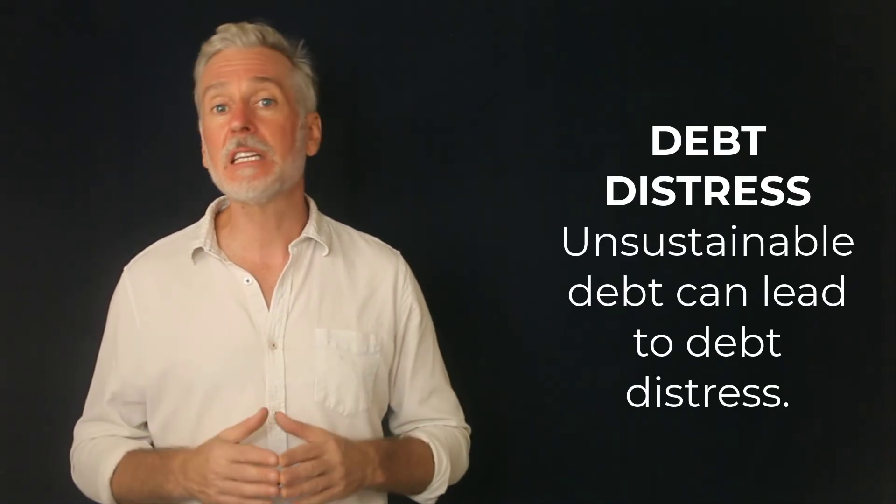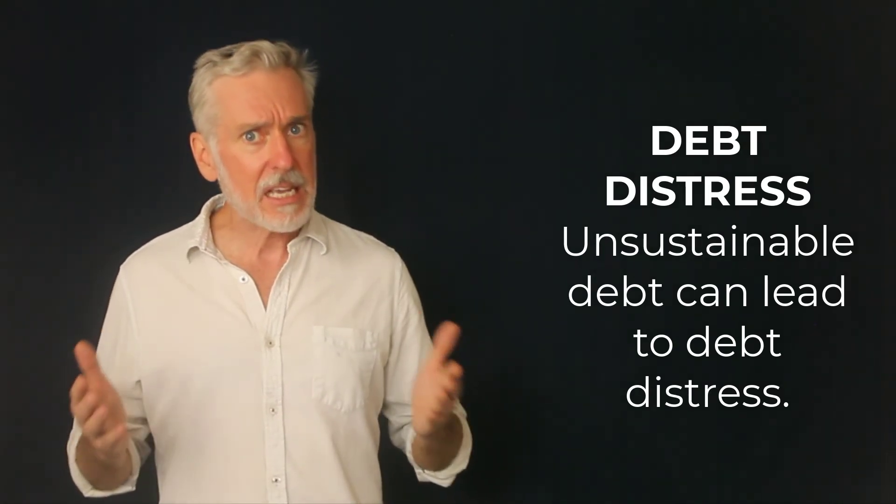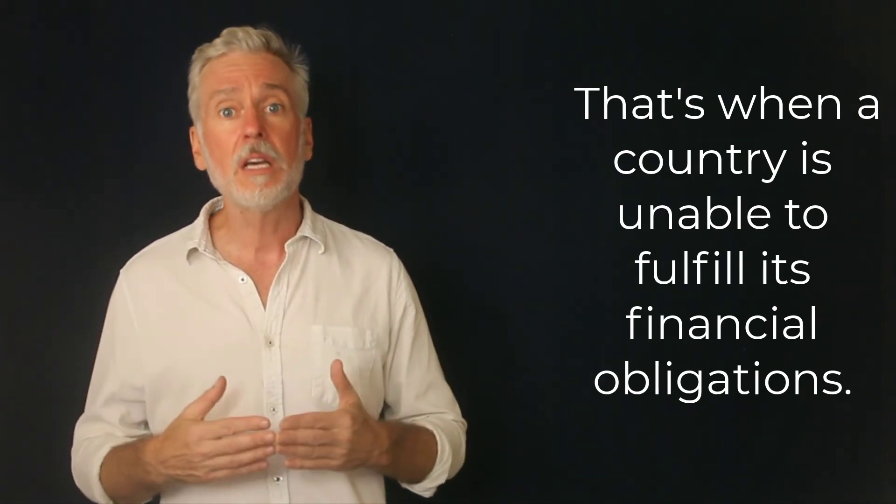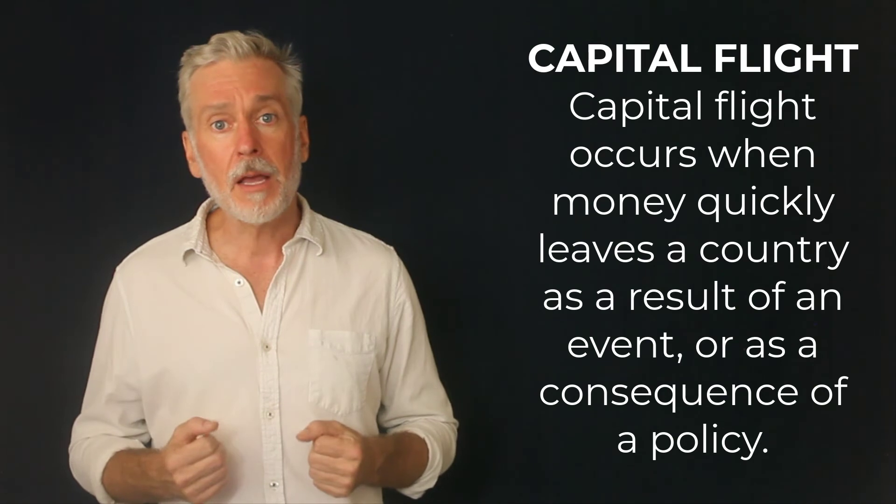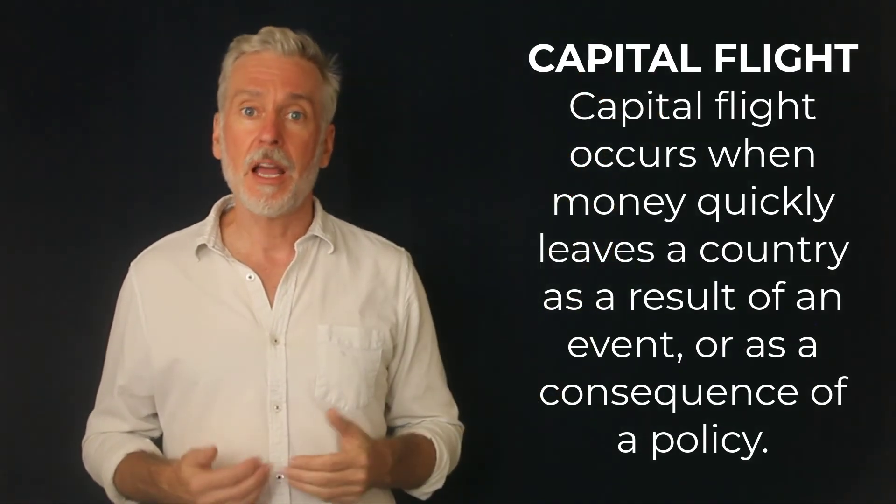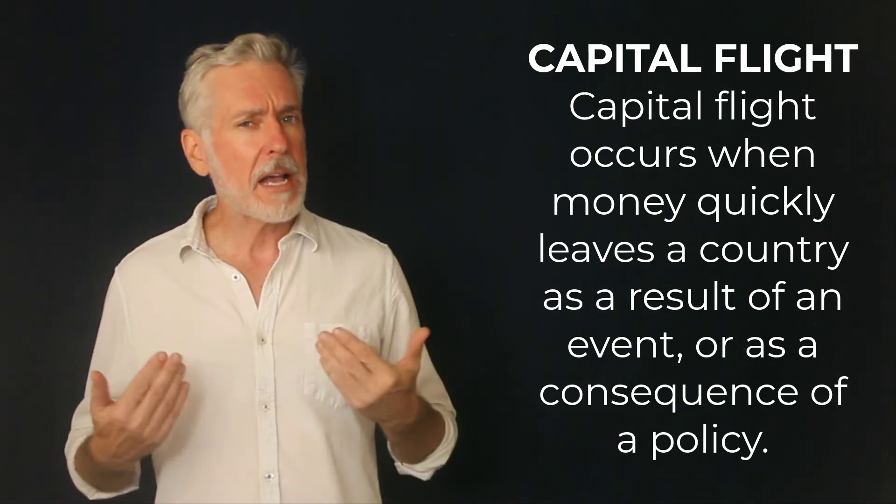Debt distress. Unsustainable debt can lead to debt distress. That's when a country is unable to fulfill its financial obligations and the debt needs to be restructured. Capital flight. Capital flight occurs when money quickly leaves a country as a result of an event or as a consequence of a policy.